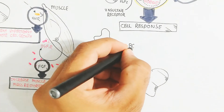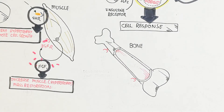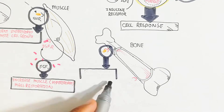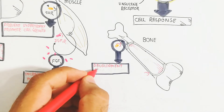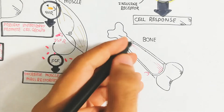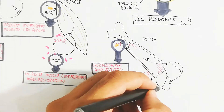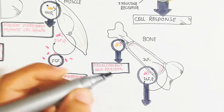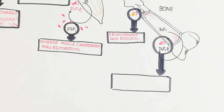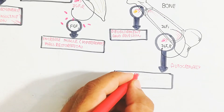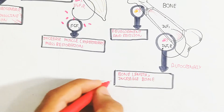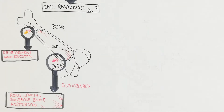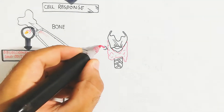In bone, growth hormone binding to the growth hormone receptor leads to cell development and division, increasing osteocyte number. IGF-1, triggered during fasting, binds with the IGF-1 receptor autocrinally, leading to bone length formation. However, growth hormone alone does not increase bone length during early development, as decreased IGF-1 release reduces bone length increase — while bone formation still increases.